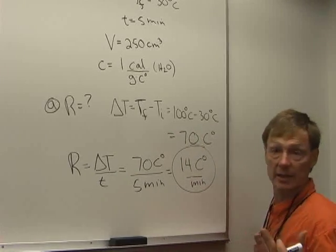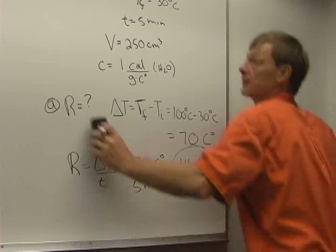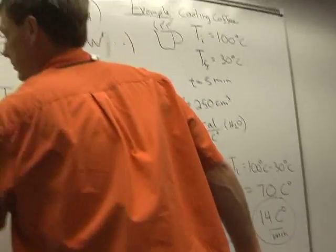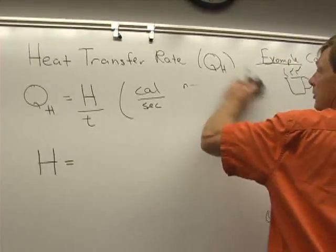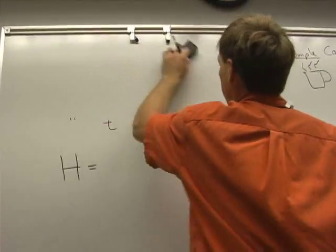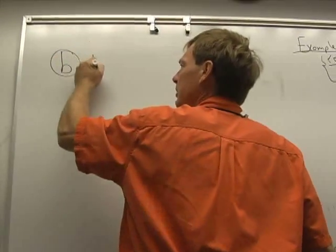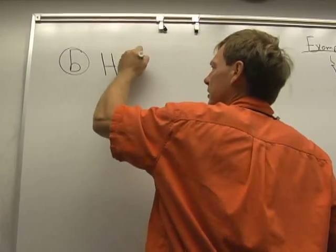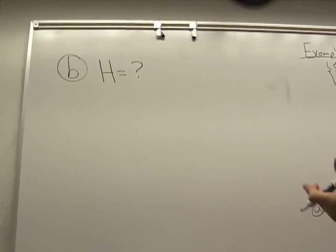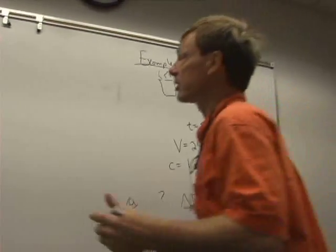The next thing we should do is we should calculate the heat absorbed. I'll call that B. So B, the heat emitted. How much heat was emitted as the coffee dropped from 70 degrees Celsius to 30 degrees Celsius?